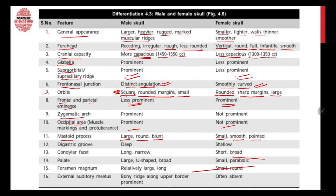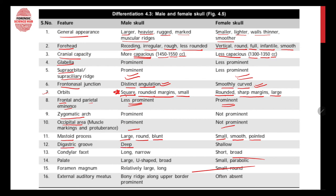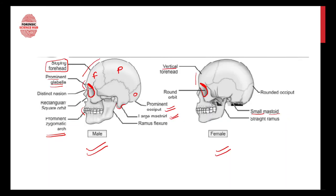The mastoid process is larger, rounder, and blunt in males, whereas it is smaller, smoother, and pointed in females. The digastric groove is deep in males and shallow in females. The condylar facet is long and narrow in males and short and broad in females. The palate is large and U-shaped in males, whereas it is smaller and parabolic in females. The foramen magnum is relatively large and longer in males, small and round in females. The bony ridge along the upper border of the external auditory meatus is prominent in males and may even be absent in females.